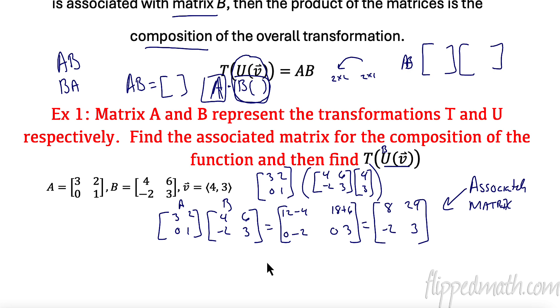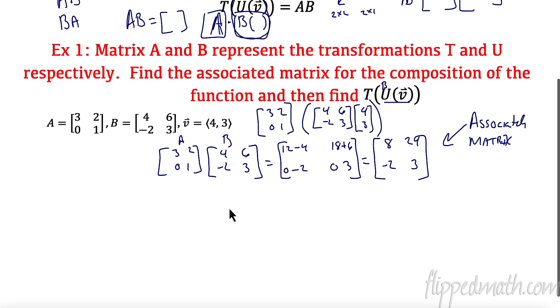Now that's going to easily allow me to do my composition of transformations. So I'm going to multiply that, 8, 24, and negative 2, 3, times my matrix. In this case, or times my vector. In this case, my vector is 4, 3.